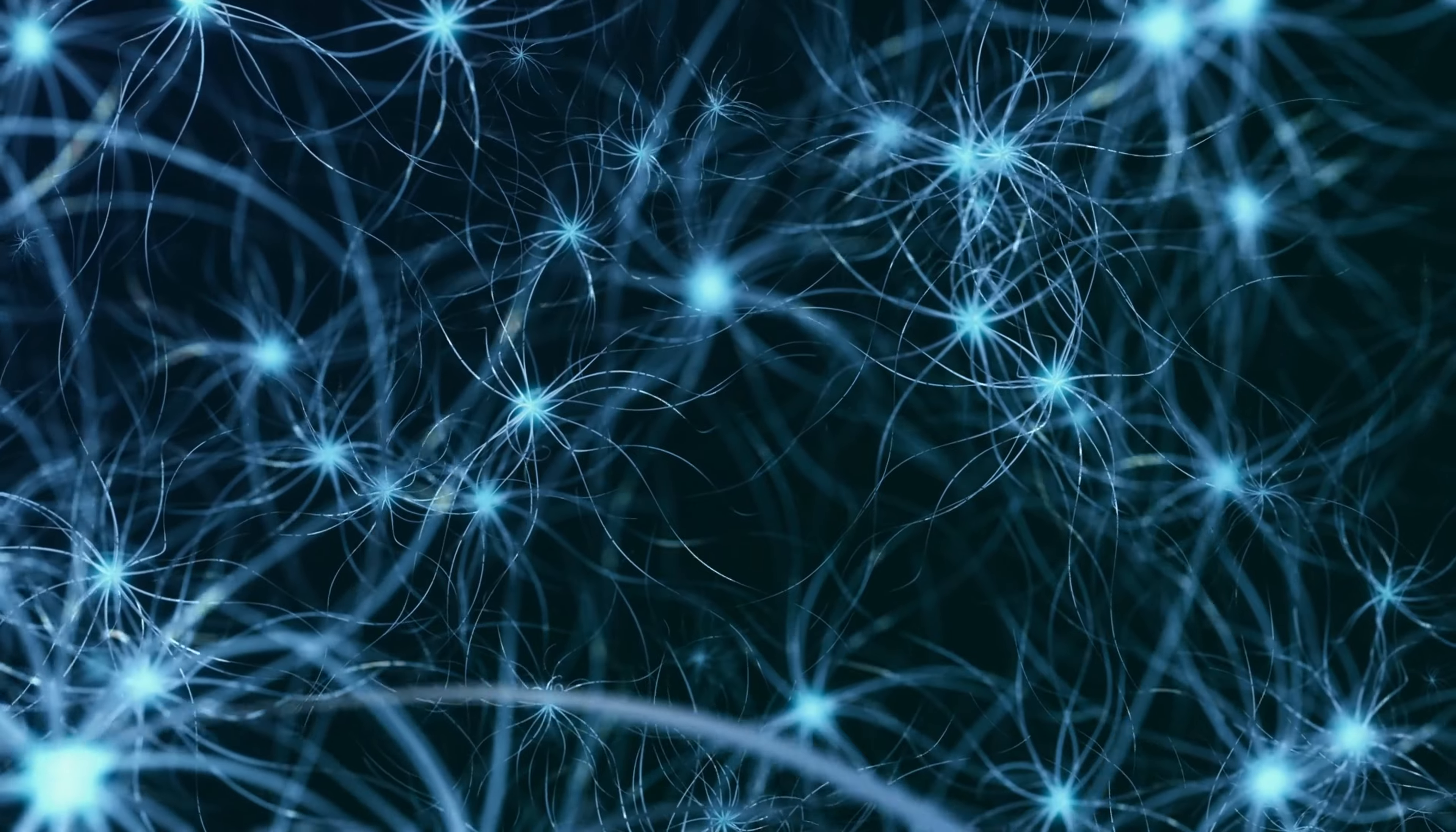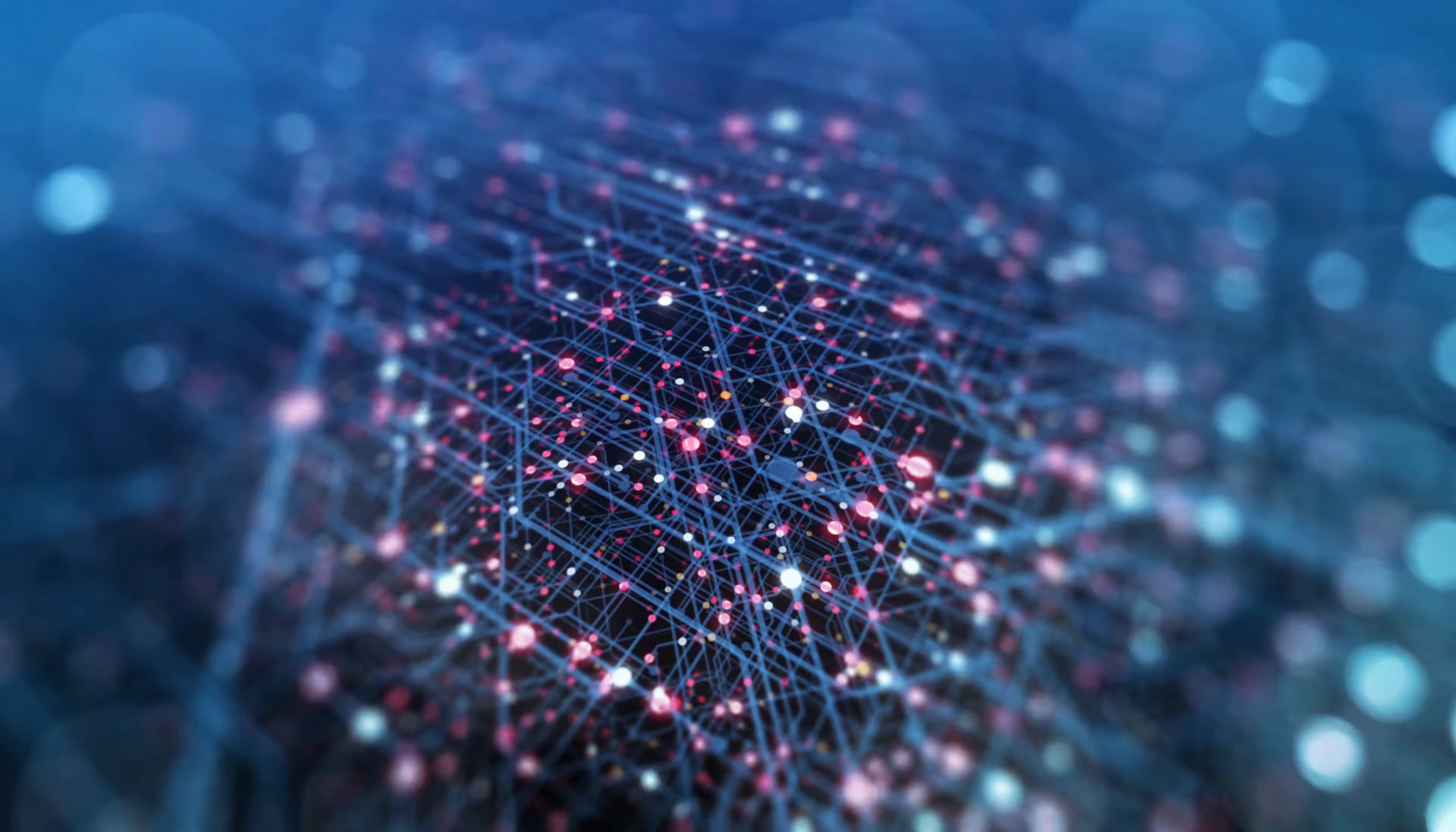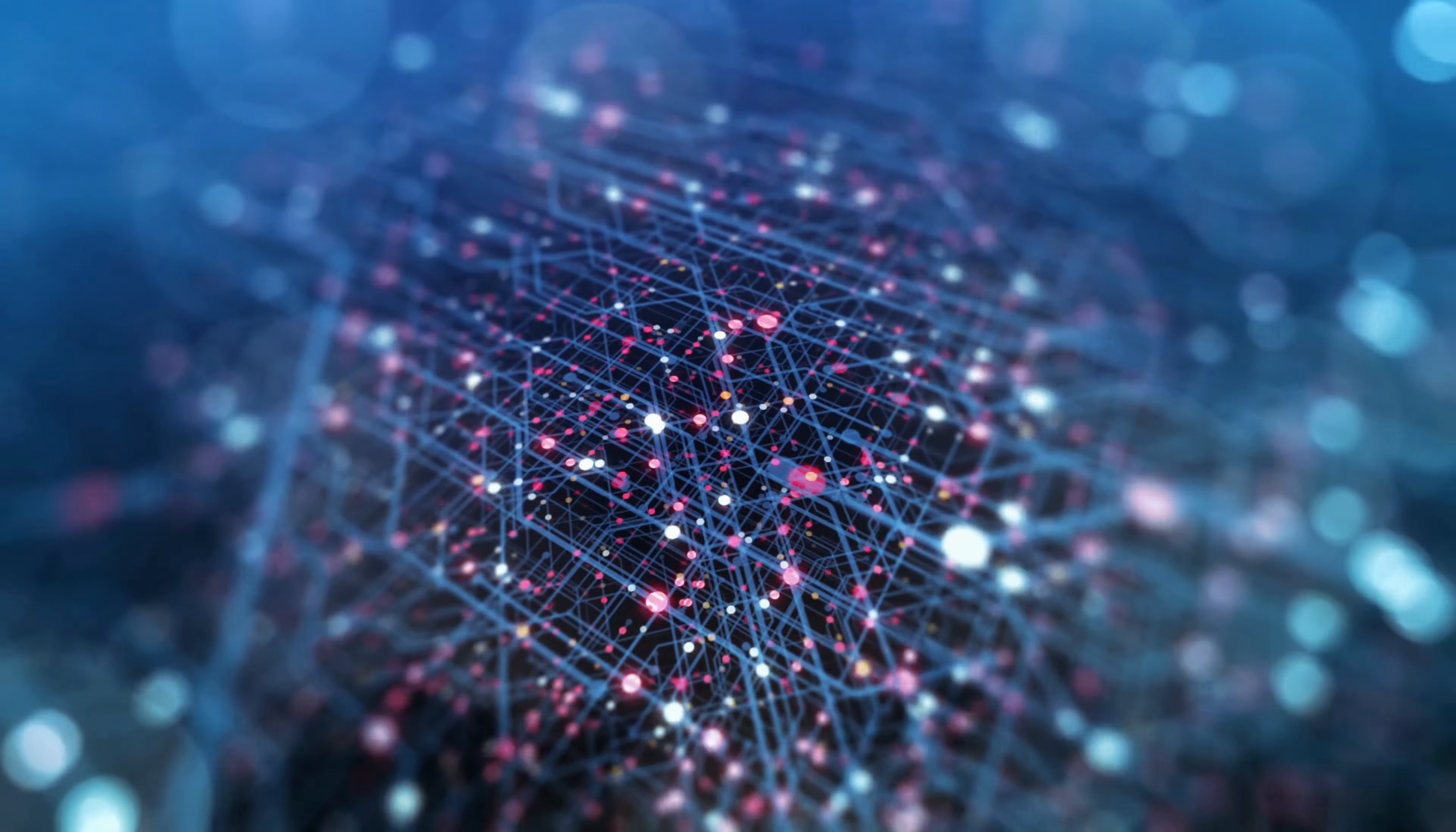The brain communicates through a complex network of neurons, which transmit electrical and chemical signals. Each neuron has a cell body, dendrites, and an axon. Dendrites receive signals from other neurons, while the axon transmits signals to other neurons or muscles.